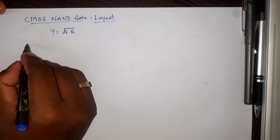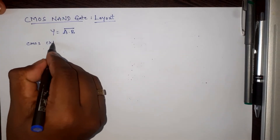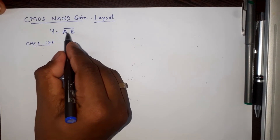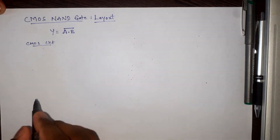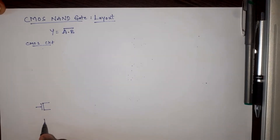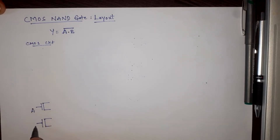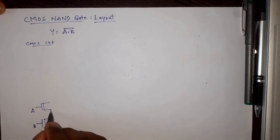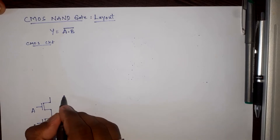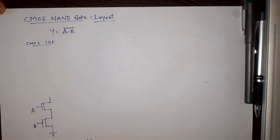First, let us write the CMOS circuit for A·B bar. Since it contains A·B, let me write the pull-down network first. Two NMOS FETs connected in series gives the output A·B, so I am giving the inputs A and B, connecting these two in series. This is connected to ground, and this node is the output.